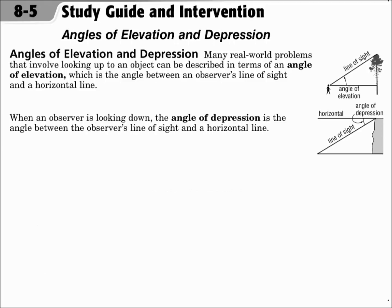Many real-world problems that involve looking up to an object can be described in terms of an angle of elevation, which is the angle between an observer's line of sight and a horizontal line. The angle of elevation starts horizontal and then goes upward. When an observer is looking down, the angle of depression is the angle between the observer's line of sight and a horizontal line — it starts horizontal and then tips down.